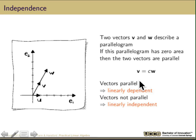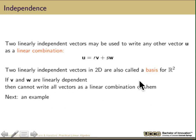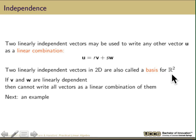When the vectors are not parallel, they are linearly independent vectors. When we say independent, we mean that the two vectors are not parallel. As soon as they're parallel, they're very dependent — if you know one, you know something about the direction of the other. Two linearly independent vectors may be used to write any other vector U as a linear combination: U equals R times V plus S times W. Any two independent vectors are also called a basis for R2.